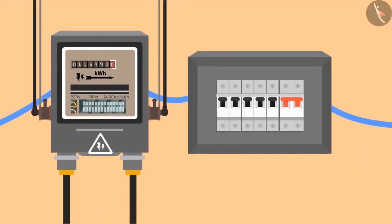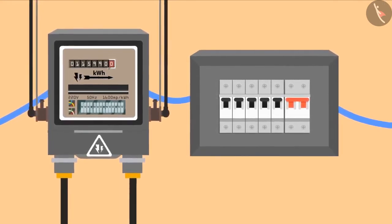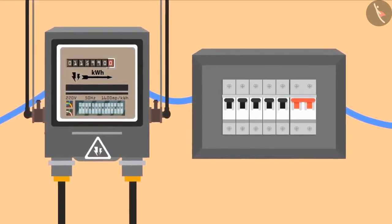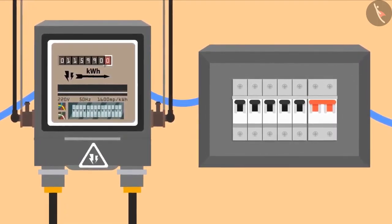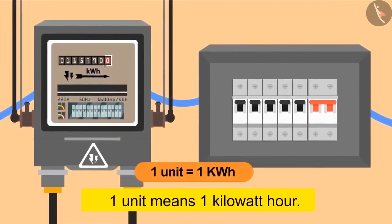You must have heard that 50 units of electricity have run this time. Do you know what these 50 units are? Let us understand this. One unit means one kilowatt hour. We use kilowatt because watt is a very small unit. One kilowatt is equal to thousand watt.